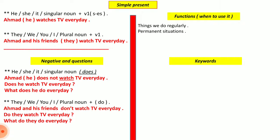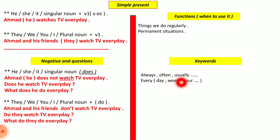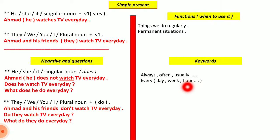Now for the keywords to memorize for simple present, which are in your booklet: 'always,' 'often,' 'usually' — these show frequency. Also the word 'every,' followed by 'day,' 'week,' 'hour,' or any time period. When you see these keywords, you directly use verb one or verb one with 's,' depending on the subject.